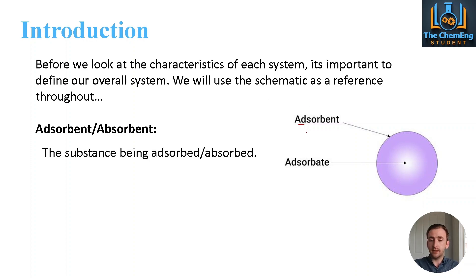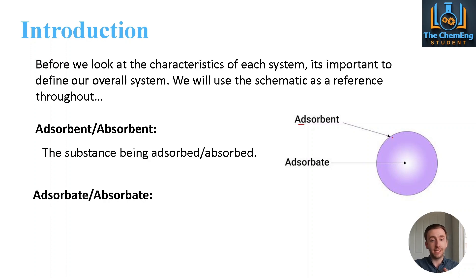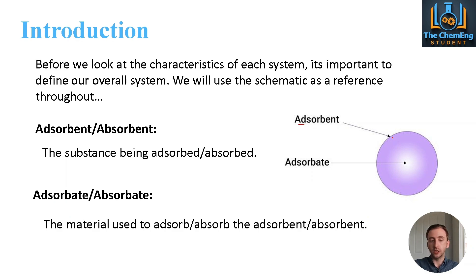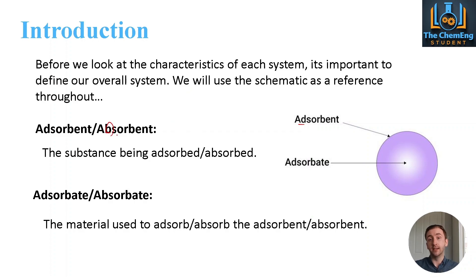If we consider the adsorbent, then this is the substance that is being adsorbed — the thing that is either going to adhere to the surface or enter the material. That particular bulk material is what's known as the adsorbate. So for example, if you have a sponge, the sponge would be the adsorbate, and the water would be the adsorbent. For absorption, the same principle applies — you just change the D to a B.